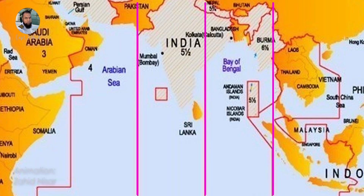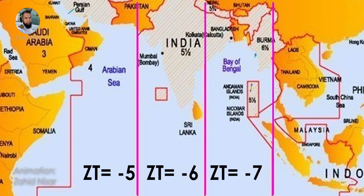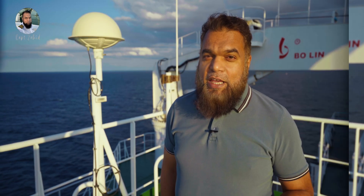Now let's understand Standard Time, which is different from GMT, LT, and LMT. Consider India as an example — different cities of India lie in different time zones, some in zone five, some in six, and a few in seven. But India doesn't keep different time zones for different states; they keep one time zone across the whole country.